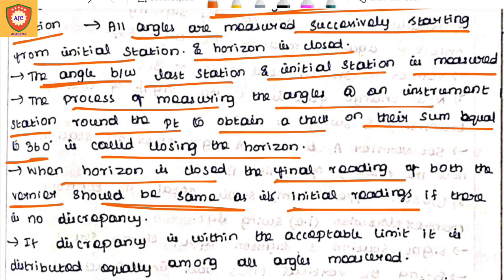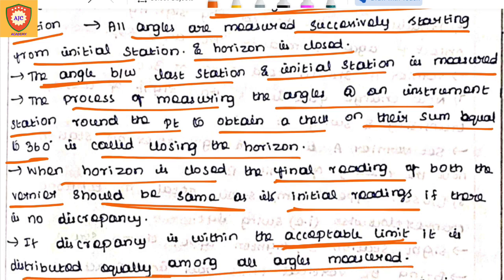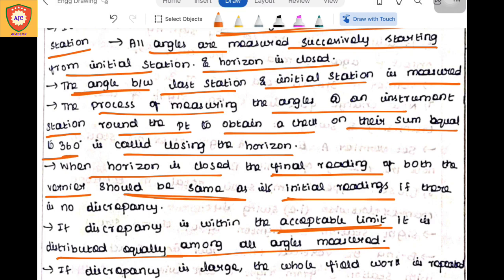If there is an error, we check the acceptable limit. We need to distribute the angles in each sector. We need to distribute the angles across the range. This is the discrepancy — we distribute the angles to the end of the range.